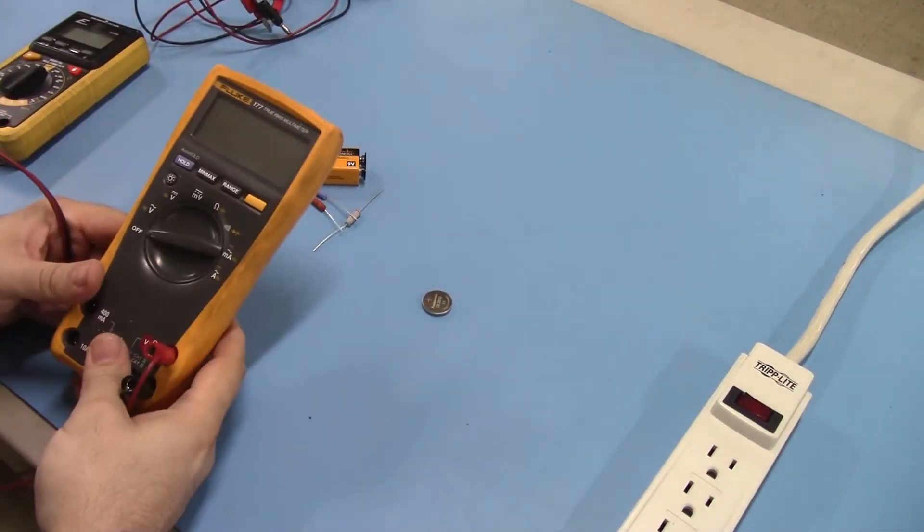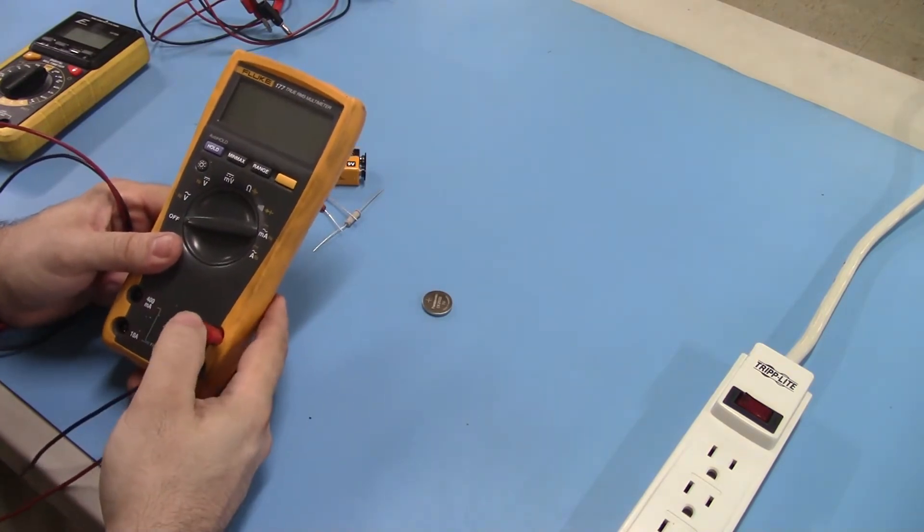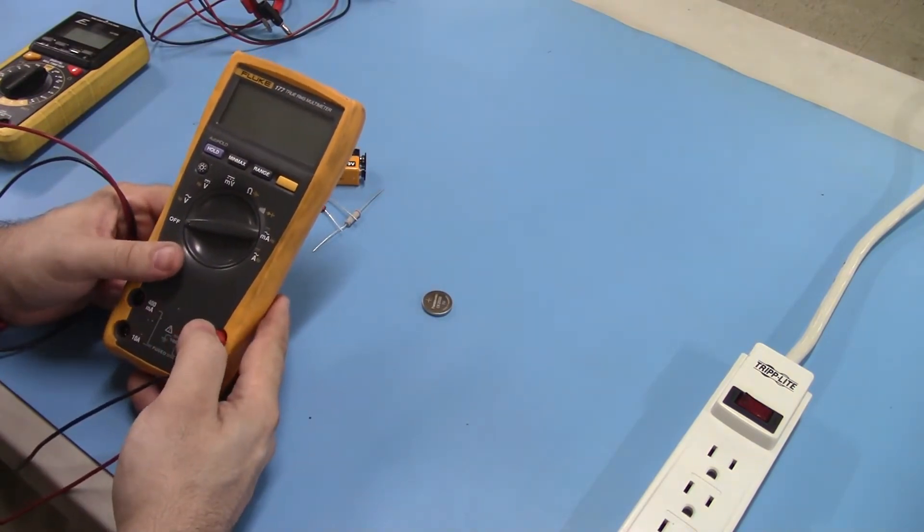We'll start off with the auto-ranging meter first. It is definitely the easiest. You can set your selector and go, basically.